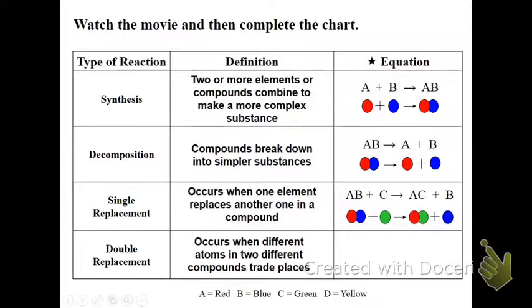And finally, double replacement occurs when atoms in two different compounds trade places. So we have AB plus CD yields AC plus BD. In this case, it's easy to see that our blue element in one compound has been replaced by the green element in the other compound.